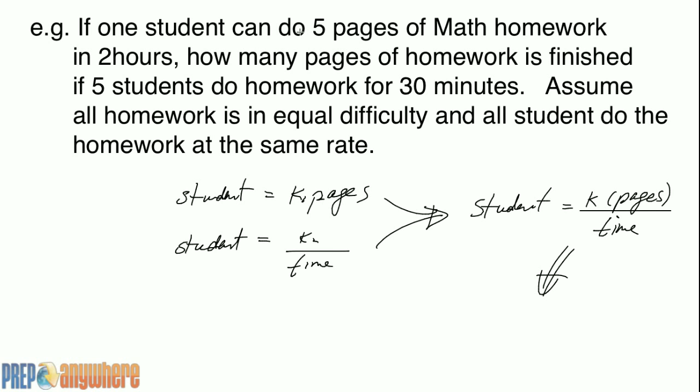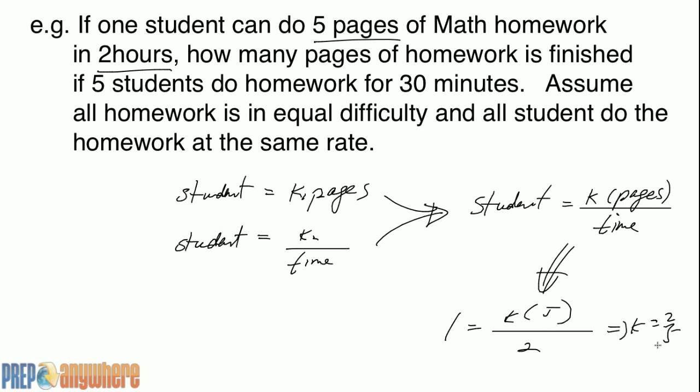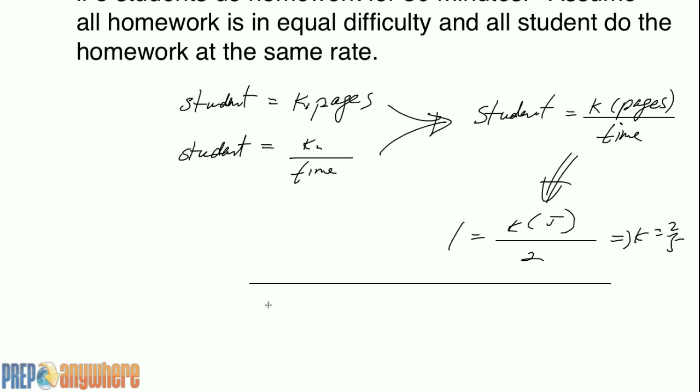So it's given that if one student can read five pages in two hours, that means k is equal to two over five. So we have a full equation now.